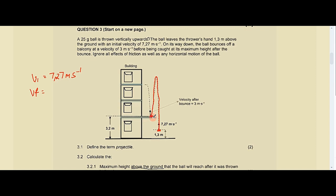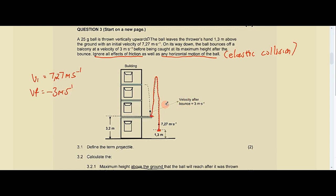The statement says the ball bounces off the balcony at 3 meters per second — that's the velocity after the bounce. Since we're told to ignore friction and horizontal motion, the collision is elastic, meaning no kinetic energy is lost. Therefore the speed hitting the balcony equals the speed leaving it. Since the ball is moving downward when it hits, and upward is positive, our final velocity vf is negative 3 meters per second.